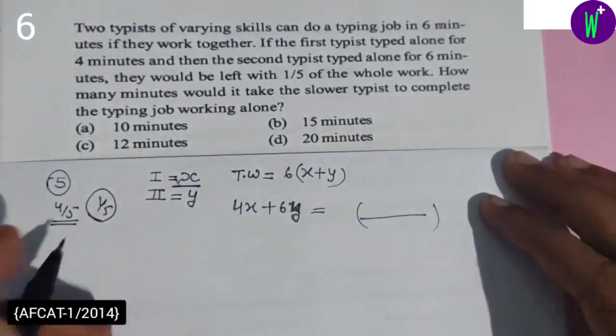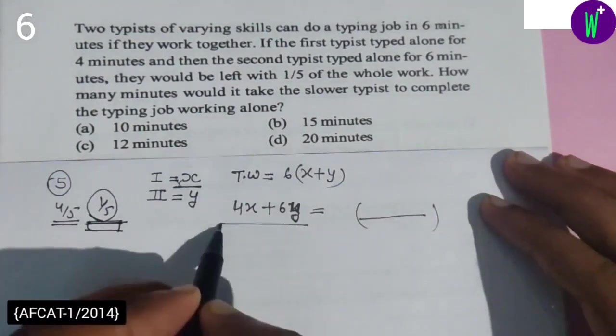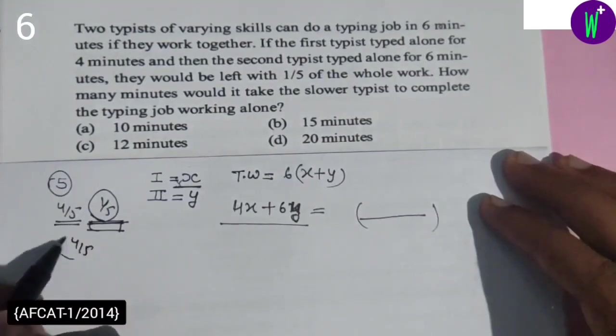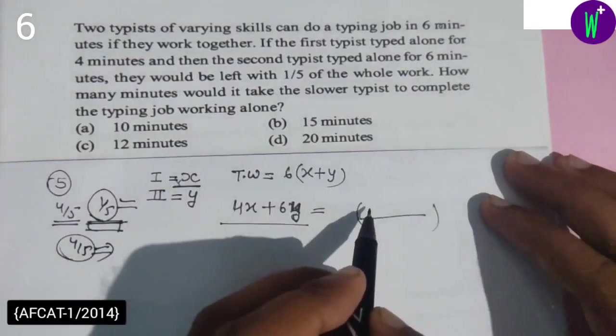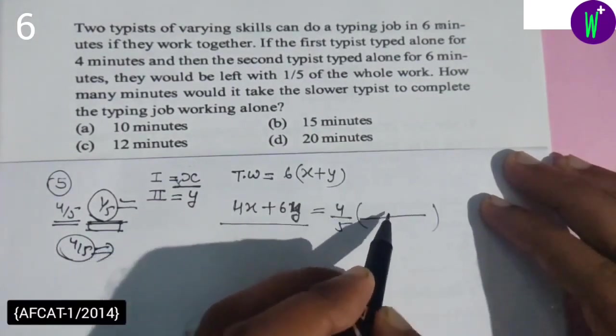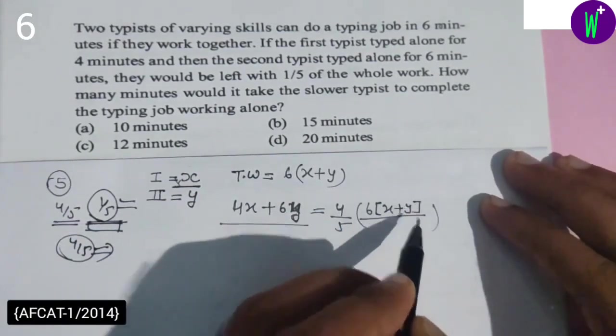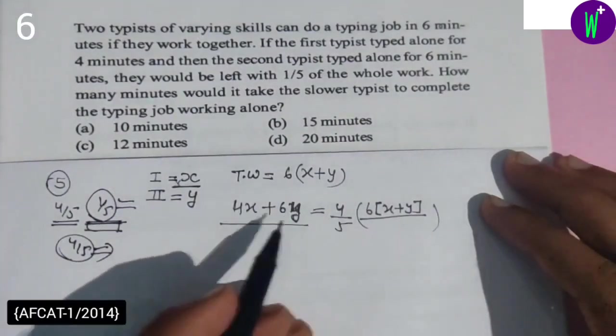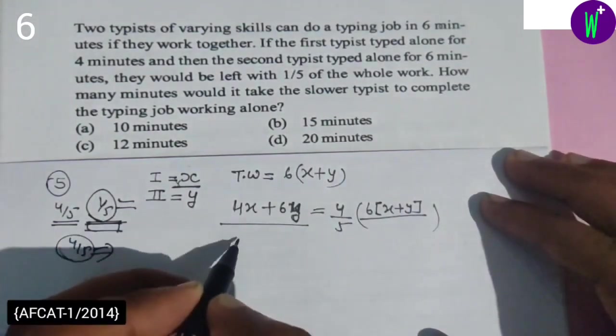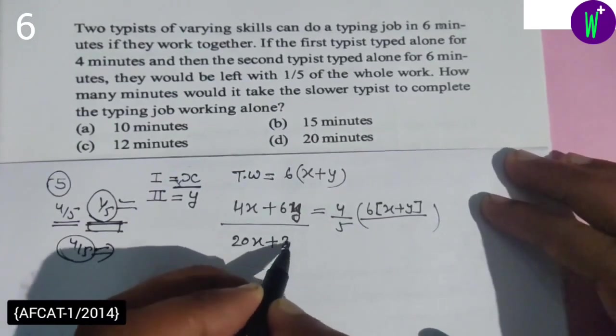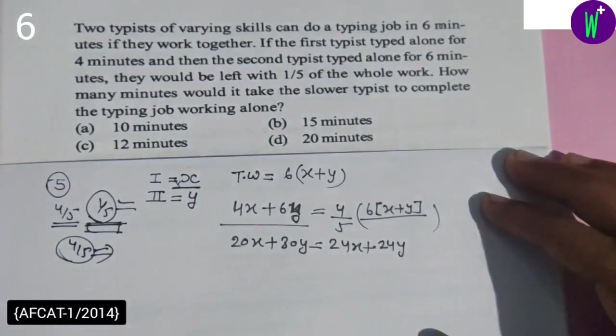They would be left with one-fifth of the whole work, meaning one-fifth of the total work was not done. So the work that was done equals four-fifths of the total work. This equals four-fifths of 6(x+y). So we have 20x + 30y equals 24x + 24y.